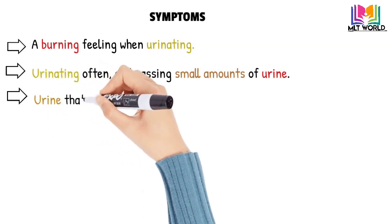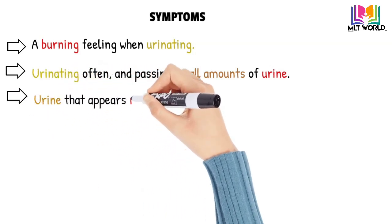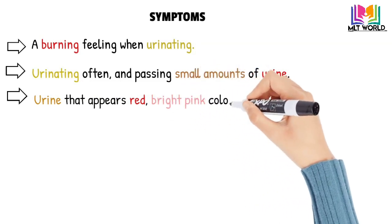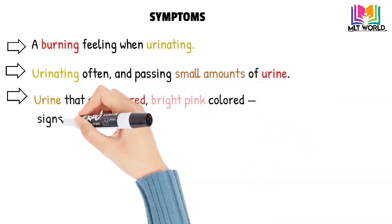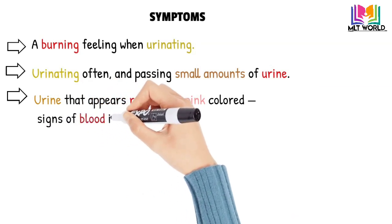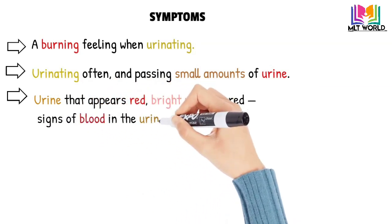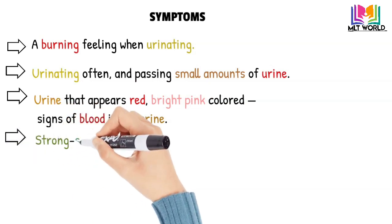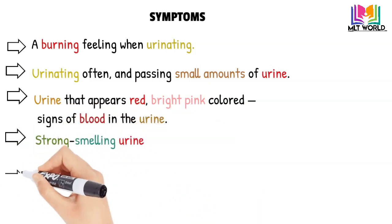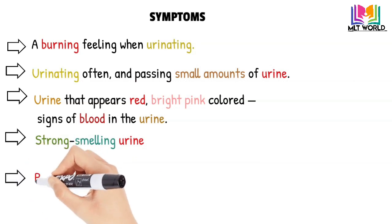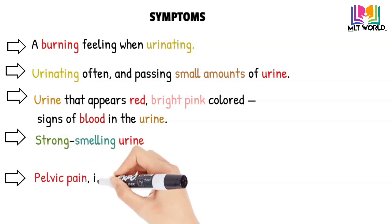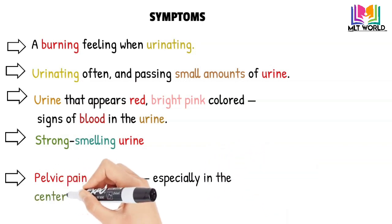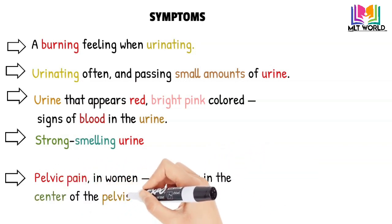Urine that appears red or bright pink colored is a sign of blood in the urine — you will observe the color change if you have UTI. The smell of the urine will also be strong. Females especially will feel pelvic pain in the center of the pelvis and around the area of the pubic bone.